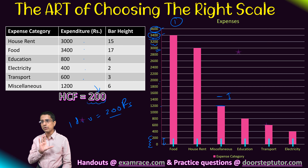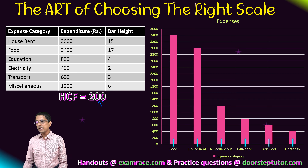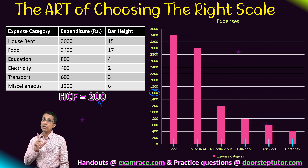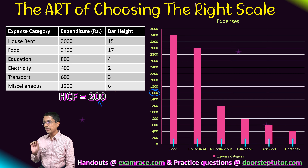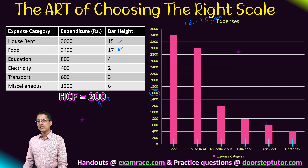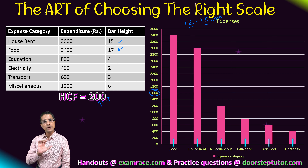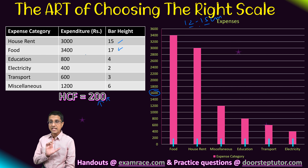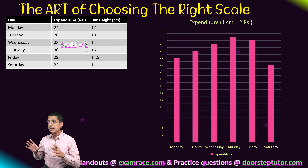To avoid those problems, choose your scale very carefully. This is an ideal circumstance when we were able to choose the scale directly as the SCF and read values directly from the y-axis. This is however not always possible. If you take the SCF as your scale and are able to keep the bar heights between 12 to 15 centimeters, that is ideal. You should never exceed a bar height of 12 to 15 centimeters when drawing a bar graph.